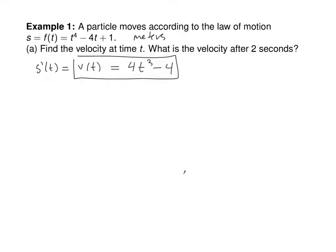What is the velocity after 2 seconds? Let's plug 2 in. 4 times 2 cubed minus 4, so 8 times 4 is 32, and if we're working in meters, that would be meters per second.